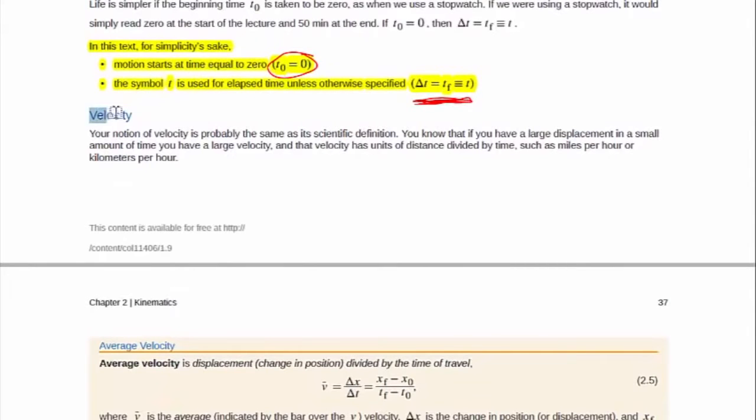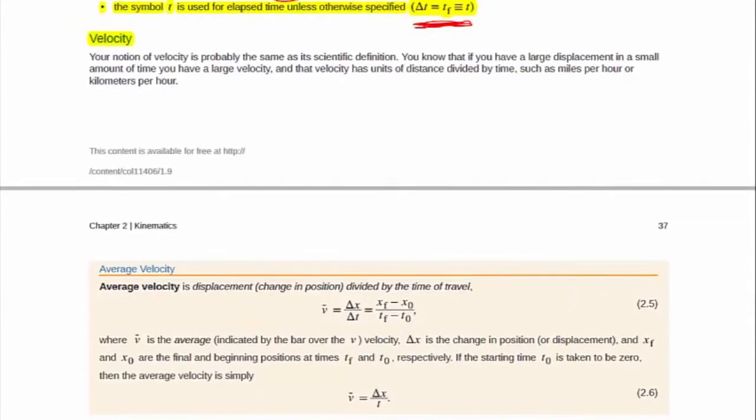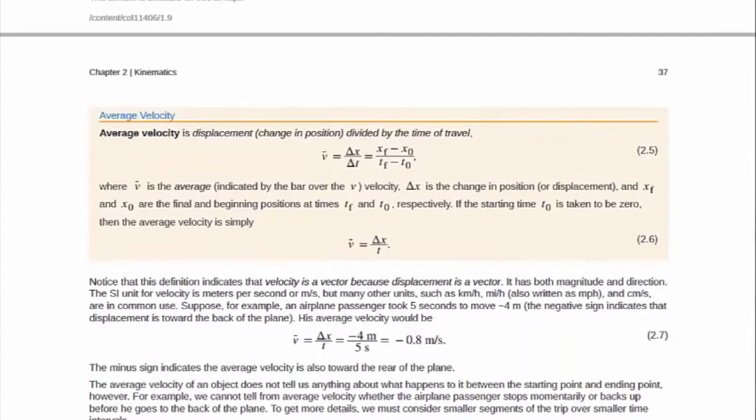Then you move on to velocity. Well, once again this is a term that has a colloquial everyday definition and a precise physics definition. That's worth paying attention to. This statement here is the definition of velocity written mathematically. This is a key definition for this class expressed in a mathematical form.